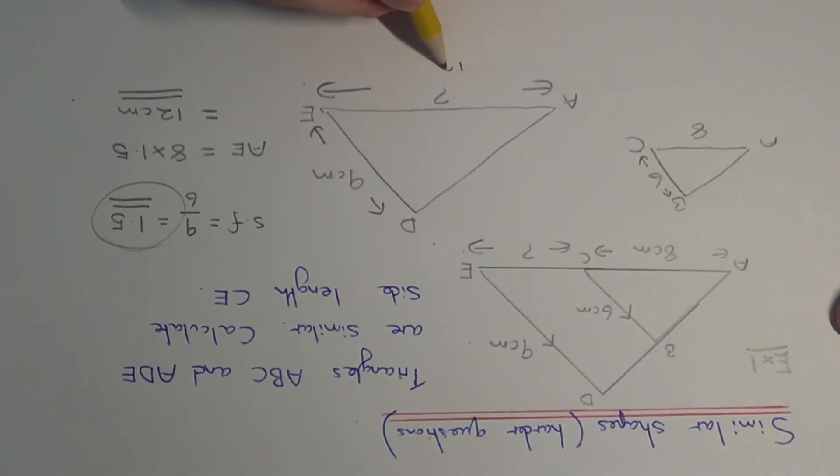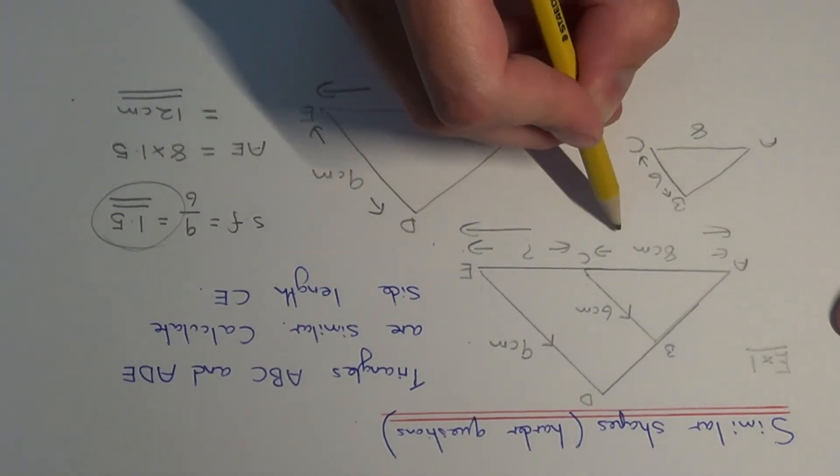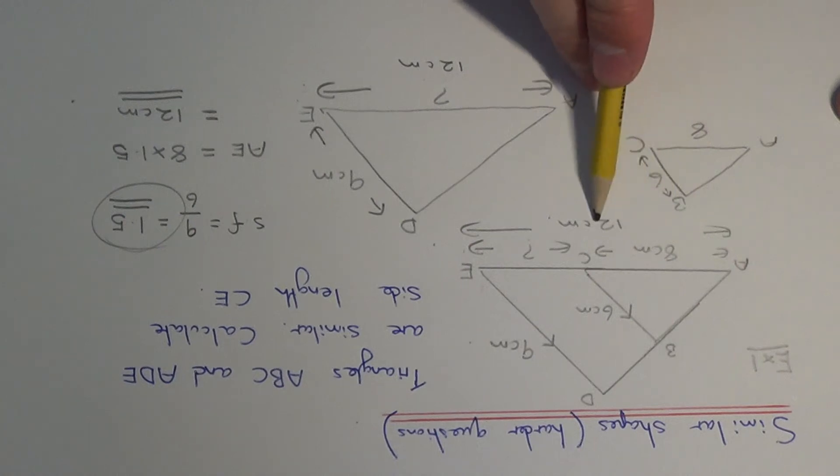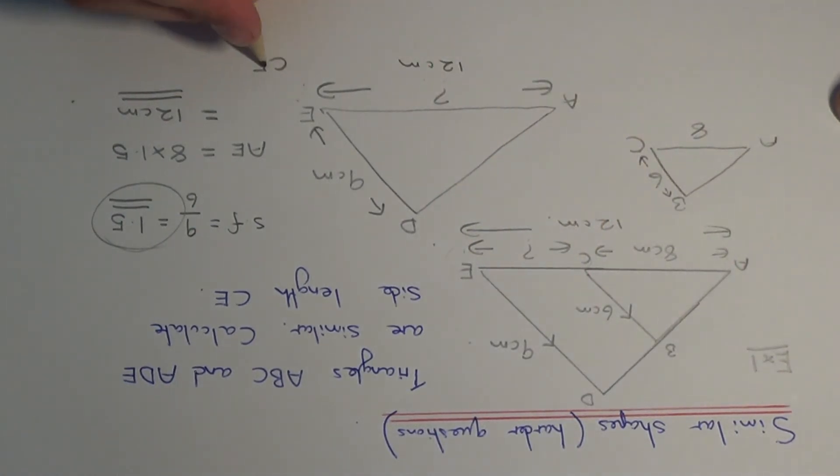So we know that AE is 12. So we've just got one little thing to do now. We just need to take the 8 from the 12 to give us the length CE, which gives a final answer of 4cm.